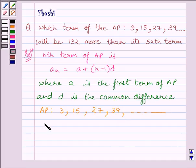Clearly, the first term of the AP is equal to 3 and the common difference is equal to 15 minus 3, equal to 12.